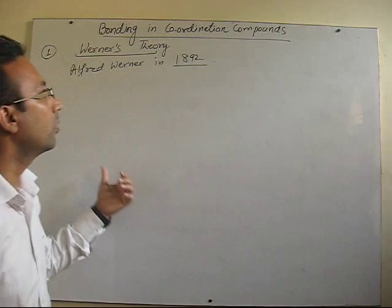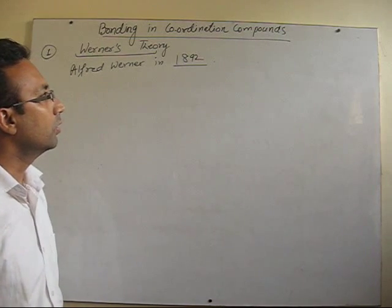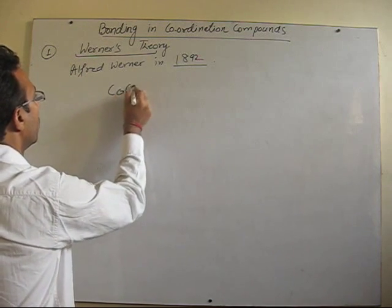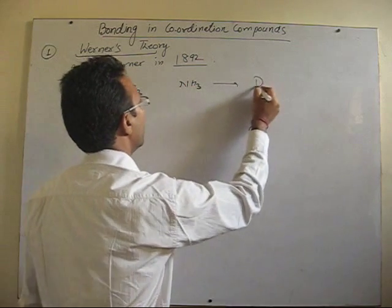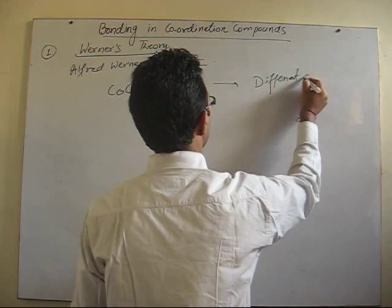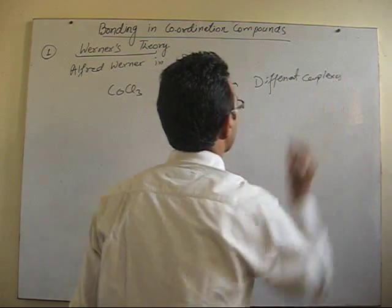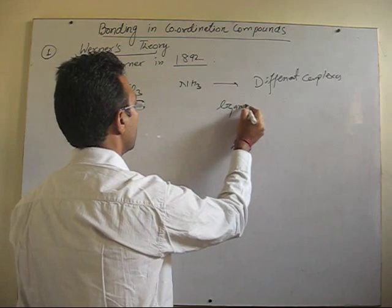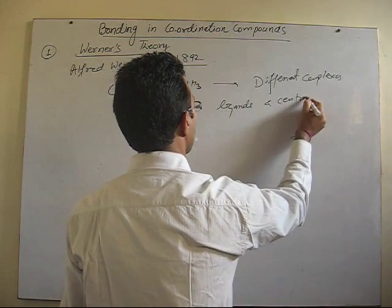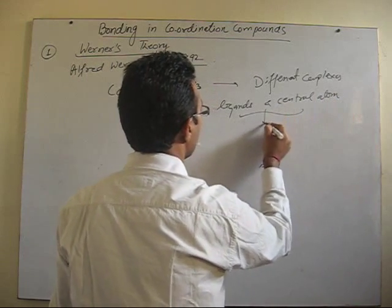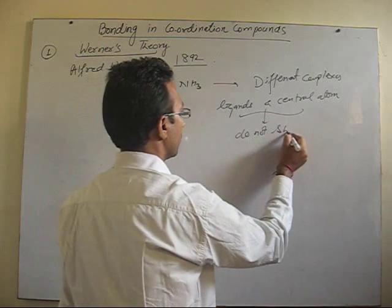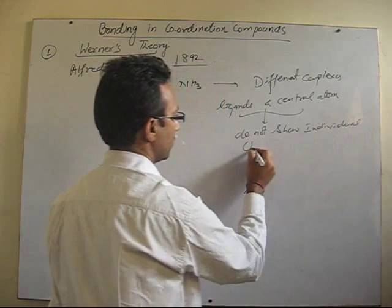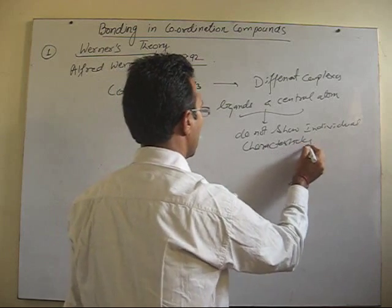As we have discussed compounds of cobalt and ammonia according to Werner, let me highlight here some important aspects of Werner's theory: when cobalt chloride reacts with ammonia to form different complexes, after formation of the complex, the ligands as well as the central atom do not show individual characteristics or properties.